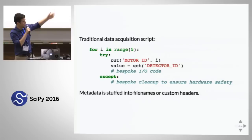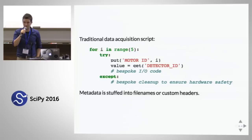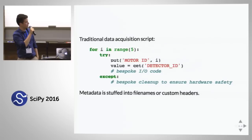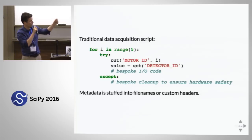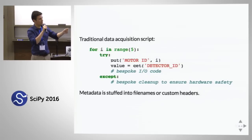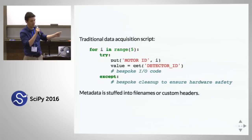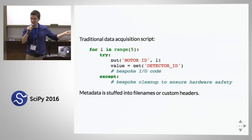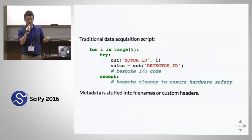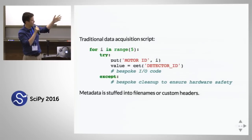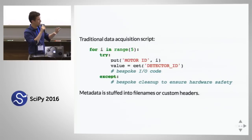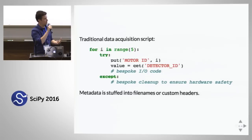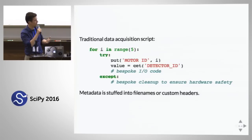Here's a typical pseudocode data collection script from an earlier facility: looping through motor positions and taking a picture at each. Missing from this is any semantics about what that motor or detector is for, or any human-readable names. We don't know why the experiment was done or what technique it was. Scientists write data out to obscure CSV or text files only they understand. If they're careful, they wrap everything in error handling to leave hardware in a safe state. What we'd like to do is separate the logic from I/O concerns and cleanup, and add meaningful metadata by default.